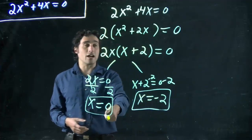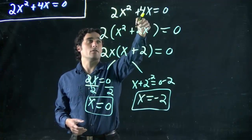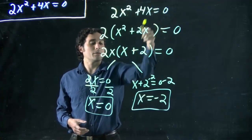x can be either one of these. In fact, if you took these values and plugged it in, well, 2(0)² is 0, 4 times 0 is 0. Well, it works.